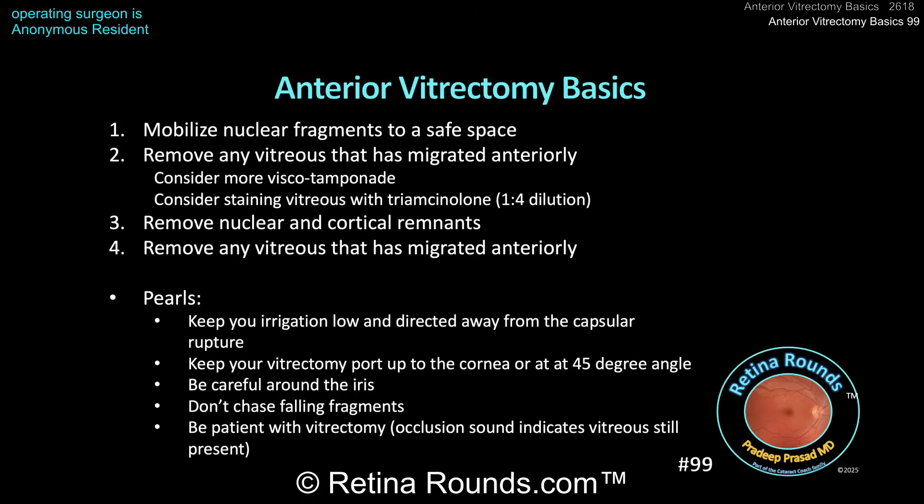When using your vitrectomy handpiece, keep the vitrectomy port up towards the cornea. Don't point it down to the posterior segment — that's just going to draw more vitreous up. Start by keeping the port up towards the cornea, then tilt it at a 45 or even 90 degree angle to engage any vitreous in the anterior chamber. Move slowly; don't make sudden movements. Use the fluidics in your favor — let the vitreous come to you. When vitreous is no longer coming to the handpiece, move towards the stained vitreous. Be very careful around the iris, as high vacuum can easily pull iris into the mouth of the vitrectomy handpiece, causing an iris defect.